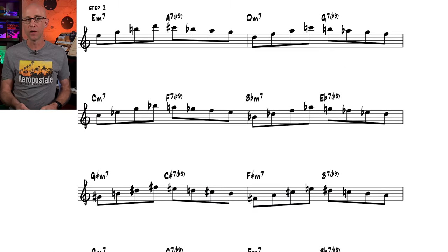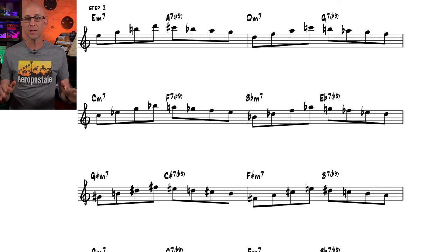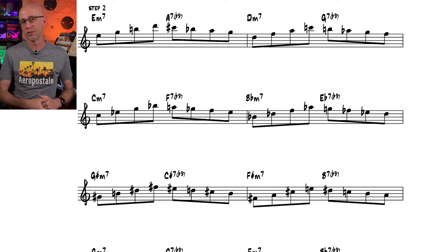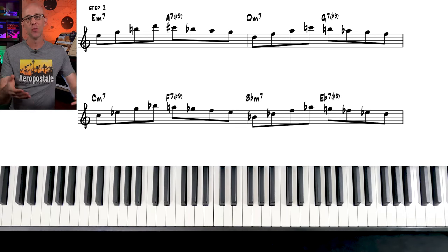Step two, let's practice the same lick but this time over consecutive 2-5s. Remember, you're going to find consecutive 2-5s like this all the time in jazz standards. So it's a great step to practice to keep your lines flowing when you're improvising.